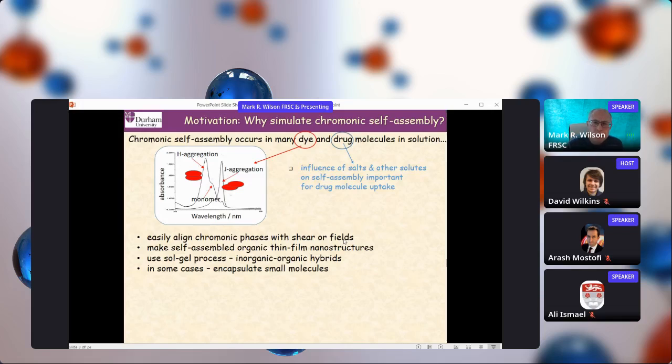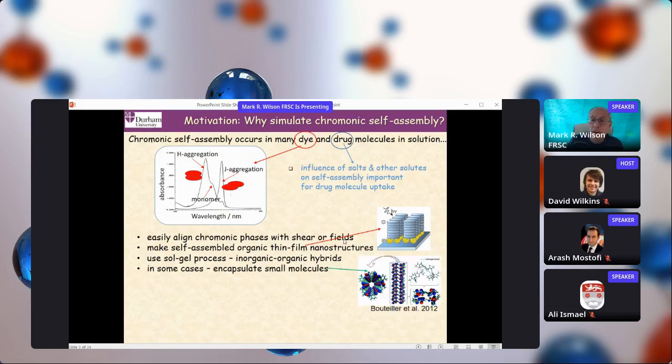Also for these chromonic phases themselves, they're actually phases which are very easy to align through either application of fields or by shear. This gives you a mechanism for making self-assembled organic thin film nanostructures. There are things like photovoltaic applications for these sorts of films. You can also use sol-gel processes to make inorganic hybrids this way. In some cases, you can encapsulate small molecules within the structures that we form in solution, which gives you a way of studying small molecules under confined conditions.